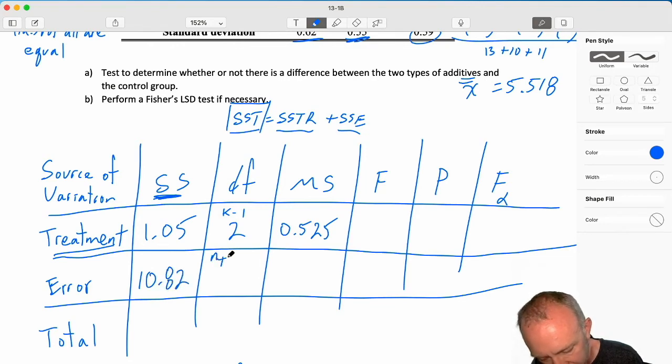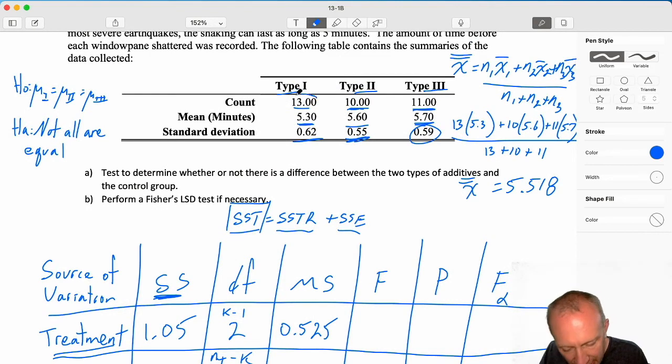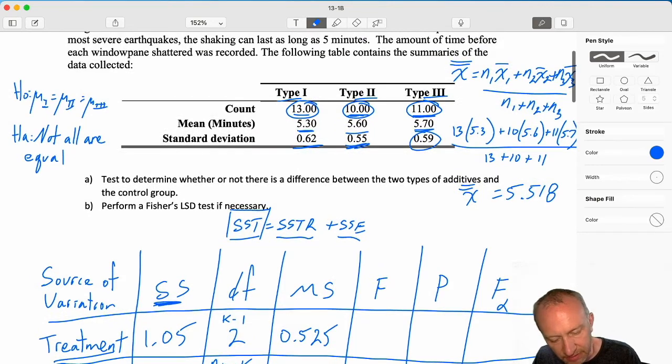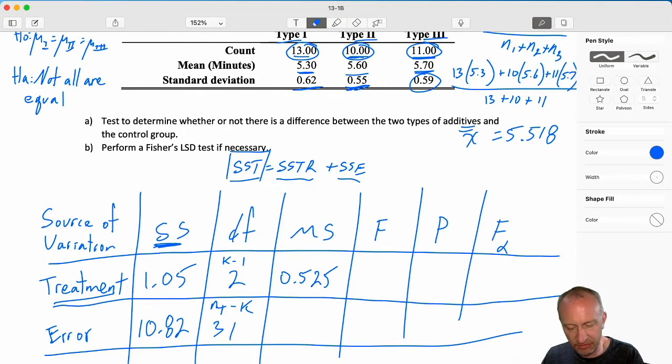10.82 for SSE. Degrees of freedom here, Nt minus k. So Nt, I'm adding up our three sample sizes. So here I have 13, 23, and 34. I have k equals 3, so I have 31 degrees of freedom. 10.82 divided by 31 gives me MSE 0.349.